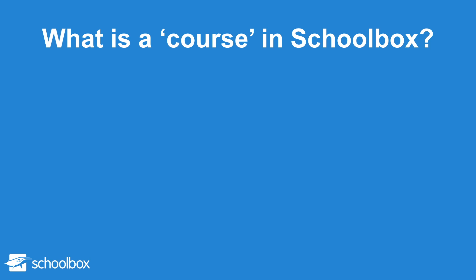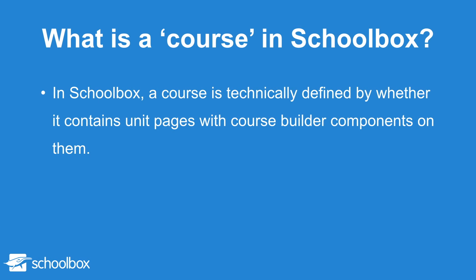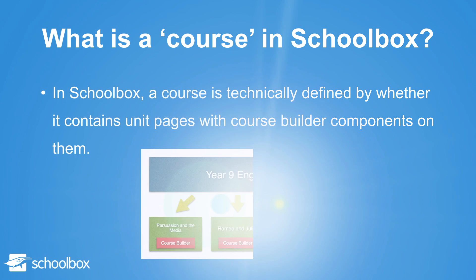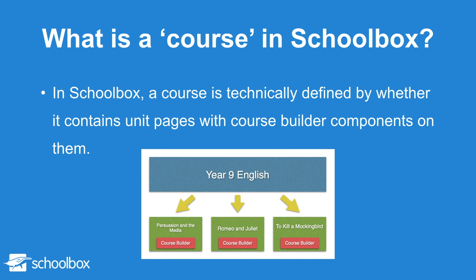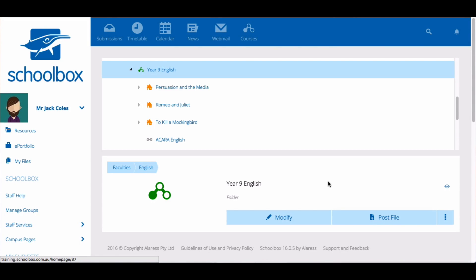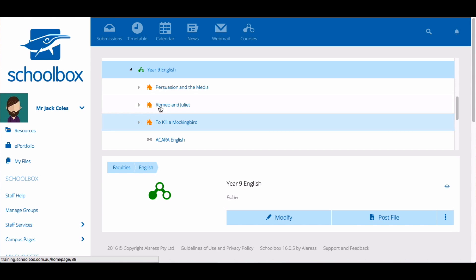In Schoolbox a course is technically defined by whether it contains unit pages with a course builder component on them. So in the previous example, in order for Year 9 English to become a course the unit pages must contain course builders. When a course builder is added to a page it becomes a unit page and the page above it becomes a course page. This is indicated by the green three dot icon.